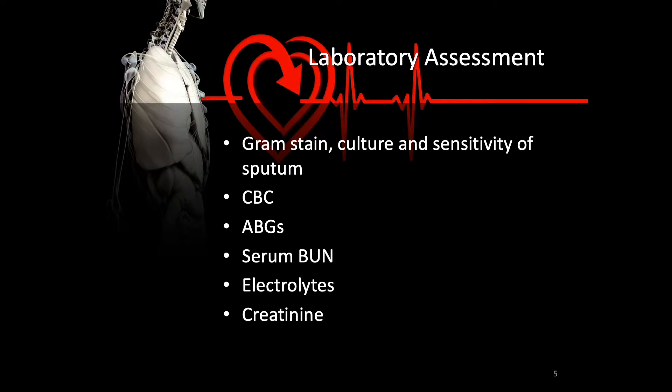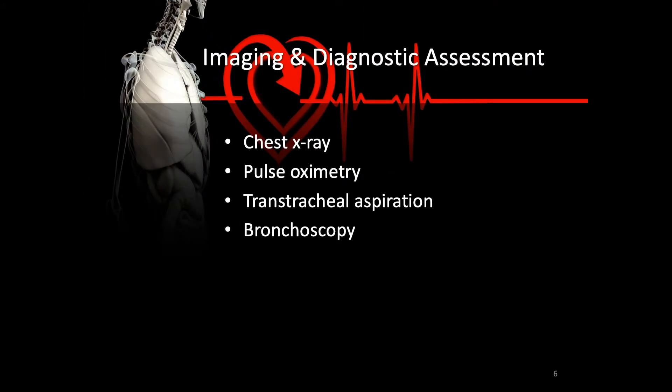Chest x-ray is still an excellent way to determine the extent and presence of pneumonia, as is pulse oximetry to trend oxygen status, transtracheal aspiration — which uses a needle to obtain sputum samples through the cricoid process — and even a bronchoscopy, an endoscopic tool that goes within the bronchus to observe the airways and lavage as necessary.